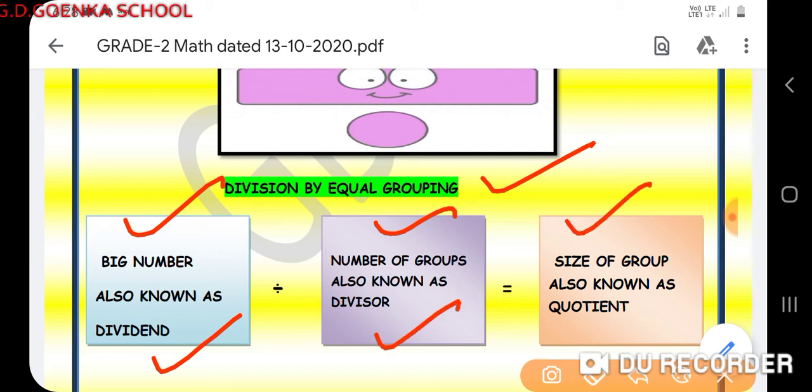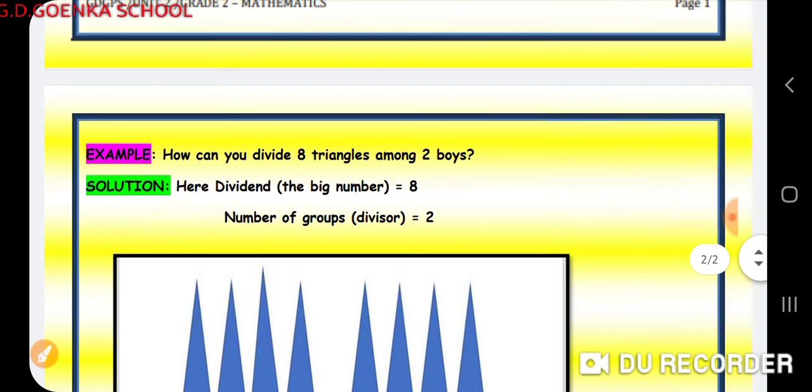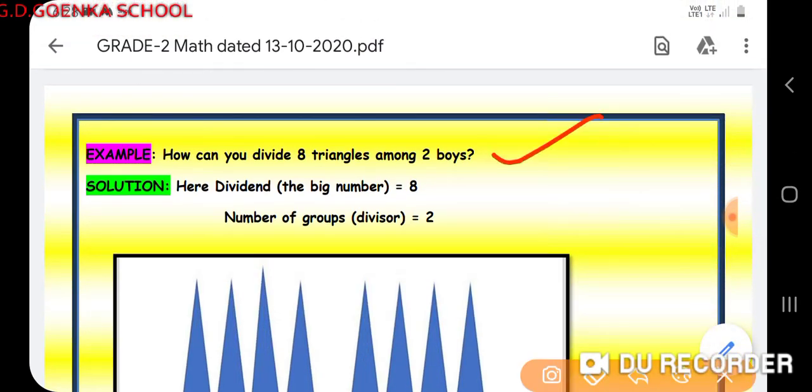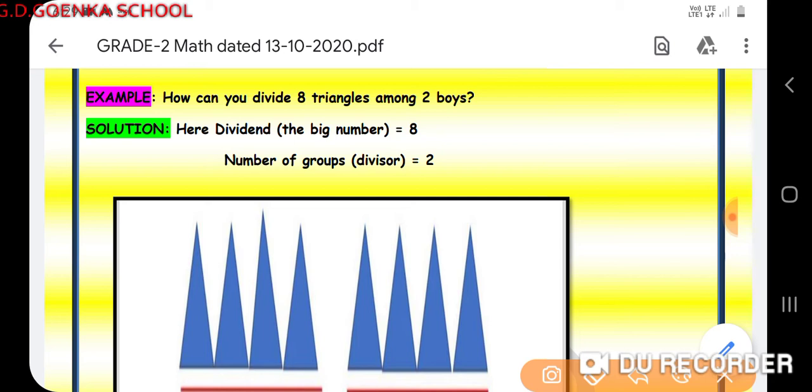Okay dear Goenkans, now let us have a look at the example. How can you divide 8 triangles among 2 boys? So what we will do here: the dividend, that is the bigger number, is 8, and the number of groups, that is the divisor, is 2.